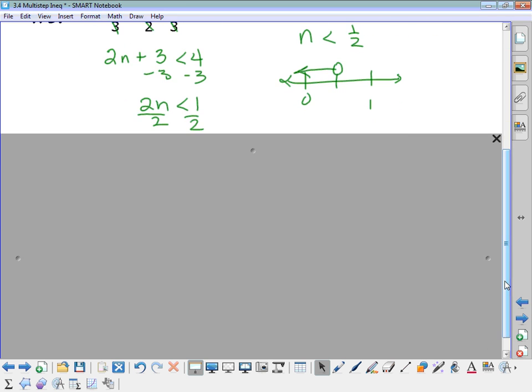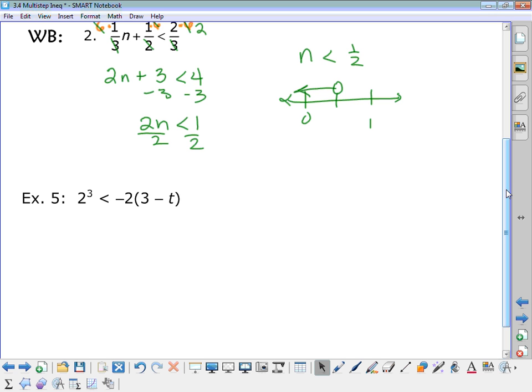All right, and one more for your notes. Okay, now I have to simplify it. I've got to take care of that exponent. And I've got parentheses. So what do you call it when you multiply with the parentheses? Distributive property, right? So we're going to distribute. So what is 2 cubed, or 2 to the third power? 2 times 2 times 2 is 8. And when I distribute, I get negative 2 times 3, which is negative 6. And negative 2 times negative t gives me a positive 2t. All right, I want to get the numbers together. I want to get the t by itself. So I'm going to add 6 to both sides. And I get 14 is less than 2t. And so we divide by 2. And I get 7 is less than t.